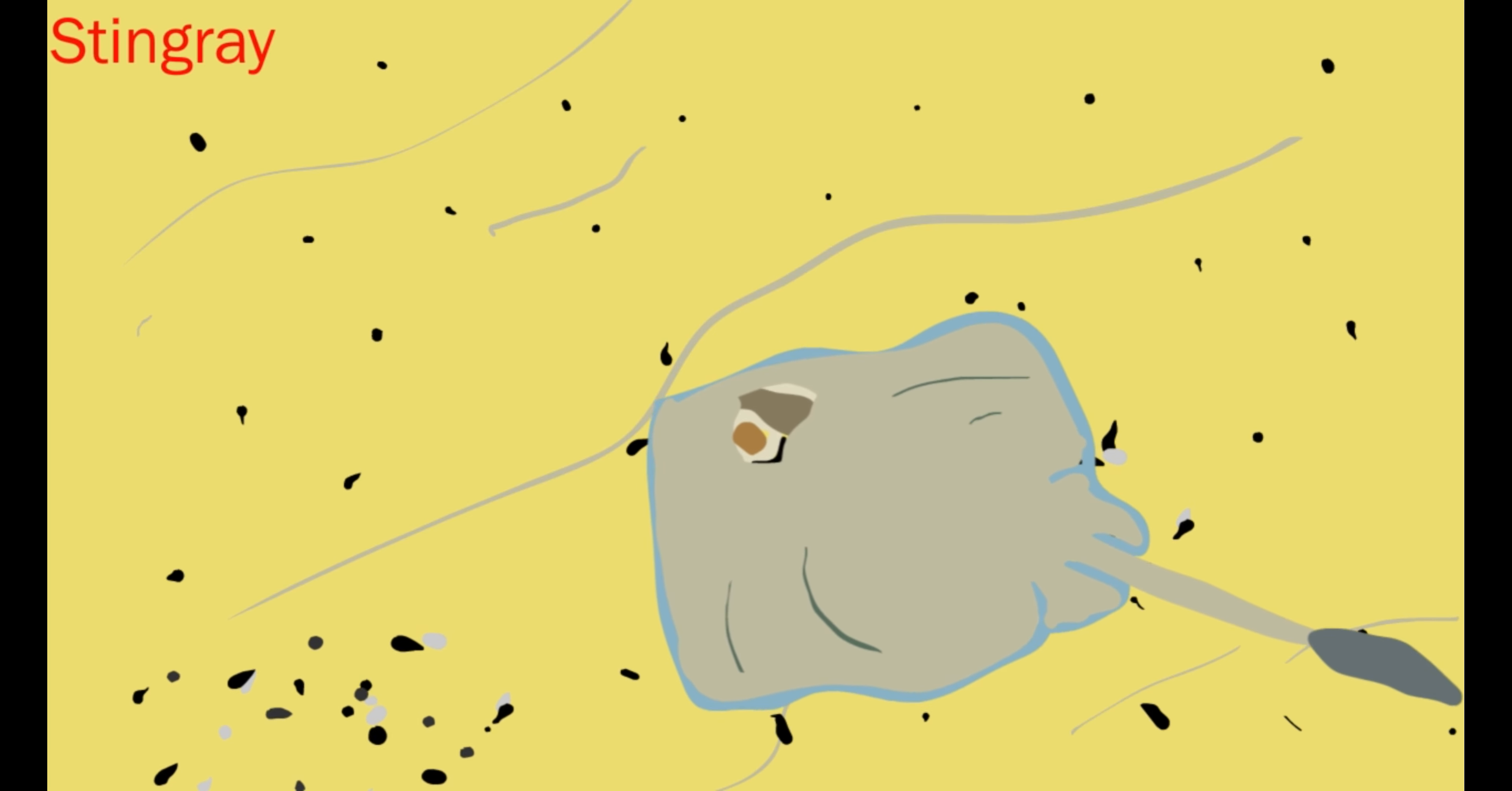Stingrays like to camouflage themselves with the sandy surface. They like to eat the worms, clams, and shrimp that live on the bay floor. Some can grow up to be 2.1 meters long.